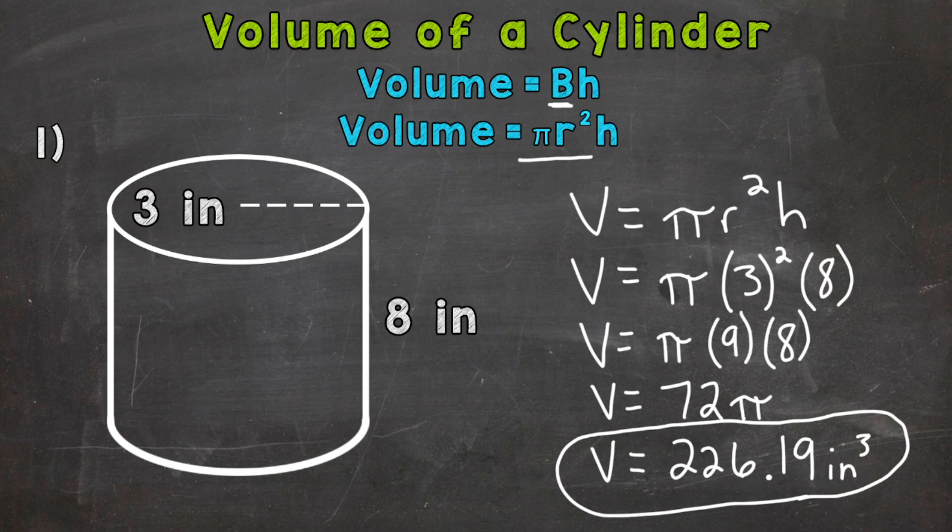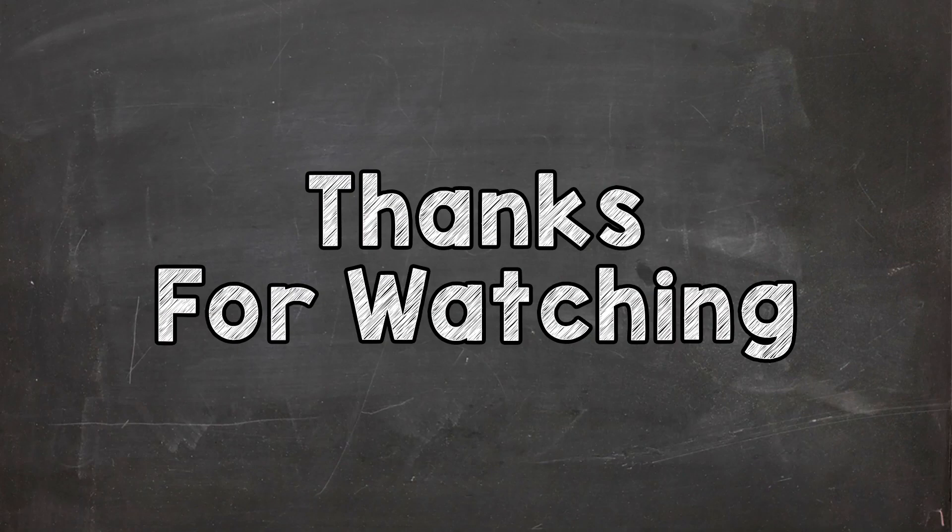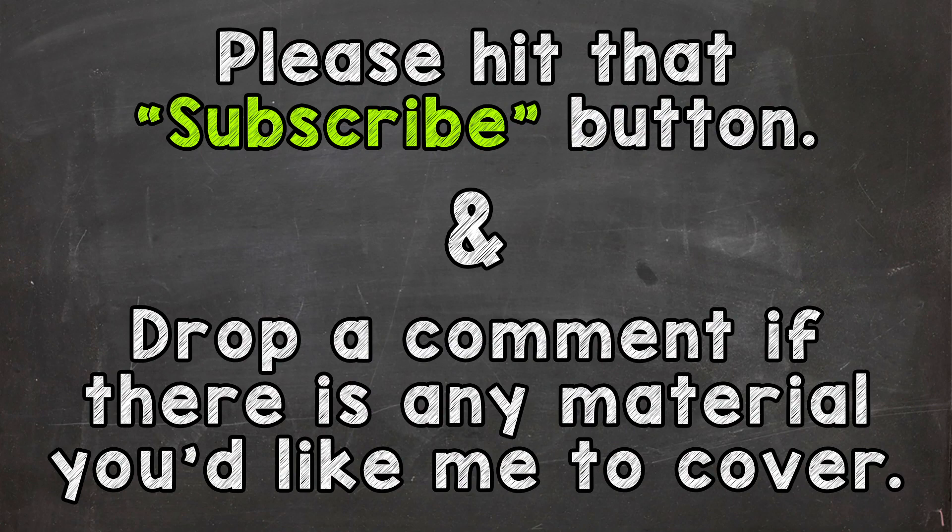So there's how you find the volume of a cylinder. We found the area of the base and multiplied it by the height. Now, our base was a circle. So we used pi r squared in order to calculate the area of our base and multiplied it by the height. I hope that helped. Thanks so much for watching. Until next time, peace.